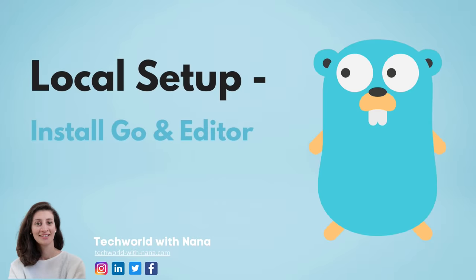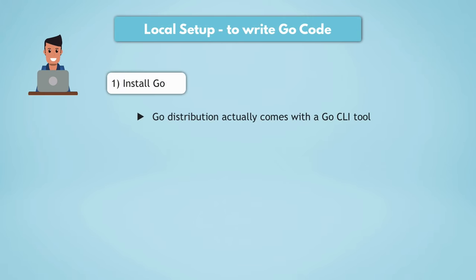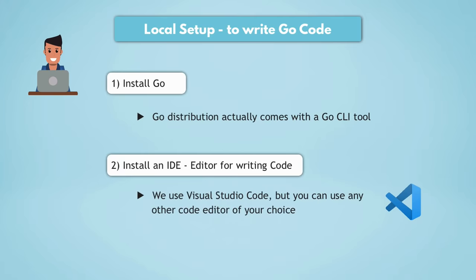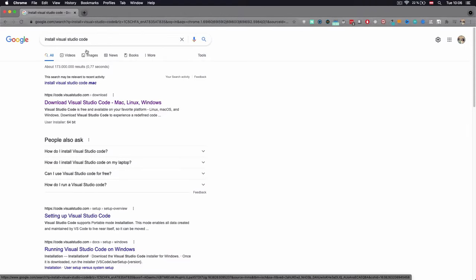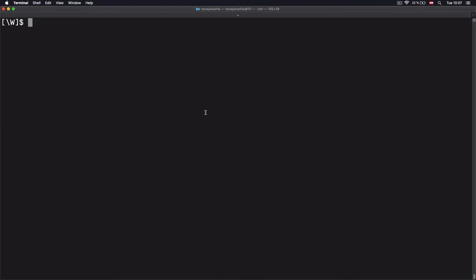To start writing a Go project, we're going to need two software programs. First, we need the Go compiler. Second, we need an IDE — we're going to use Visual Studio Code, which is super easy to download and install. If you don't have it on your computer, just search for 'install Visual Studio Code' and on their official page you have download options for all operating systems. I already have Visual Studio Code locally, so I'm going to skip that part. And second, we're going to need to install the Go compiler.